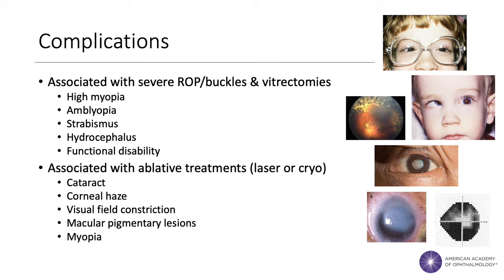It is important to realize that treatments themselves are not without consequences. The more severe the ROP, the more severe and frequent the side effects. Unlike in adults, buckles and vitrectomies are more likely to produce significant side effects like cataracts, high myopia, and amblyopia in children. Ablative therapies, meanwhile, destroy the peripheral retina, which can cause visual field restrictions and also increase the risk of cataracts, corneal haze, and pigmentary lesions.